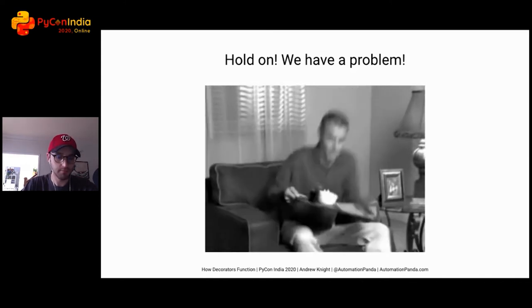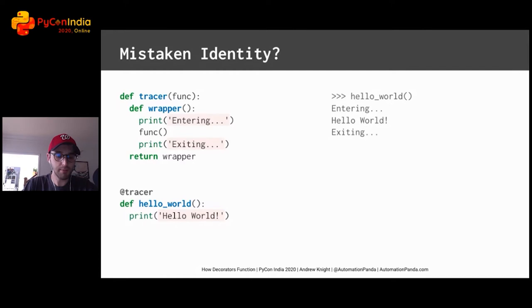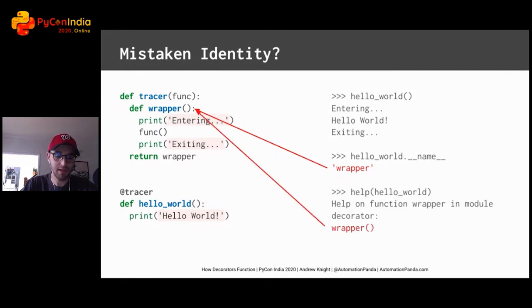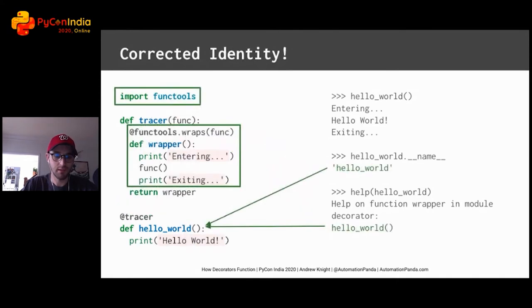We have a problem in that Python code. If the wrapper function effectively replaces hello world, then what identity does hello world report? Unfortunately, with the given code, its name is 'wrapper' and its help also returns 'wrapper'. That's not right. Never fear — there's an easy solution. The functools module provides a decorator named wraps. Put functools.wraps on the wrapper function and pass it the inner function object, and decorated functions will once again show the right identity.